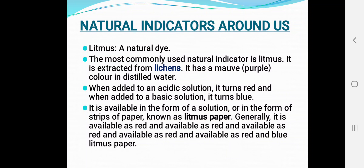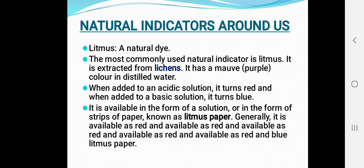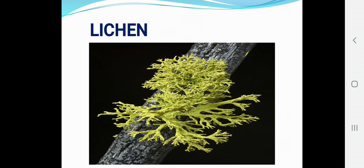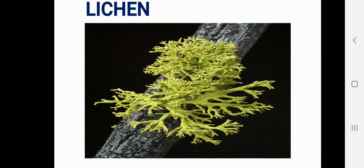When litmus is added to an acidic solution, it turns red, and when added to a basic solution, it turns blue. Litmus is available in the form of a solution or as strips of paper known as litmus paper — generally available as red litmus paper and blue litmus paper. This is the picture of lichen from which litmus is extracted.